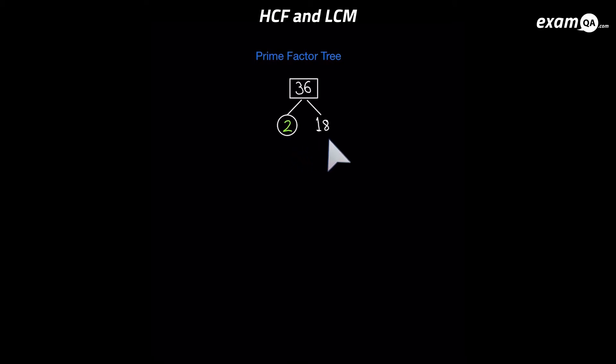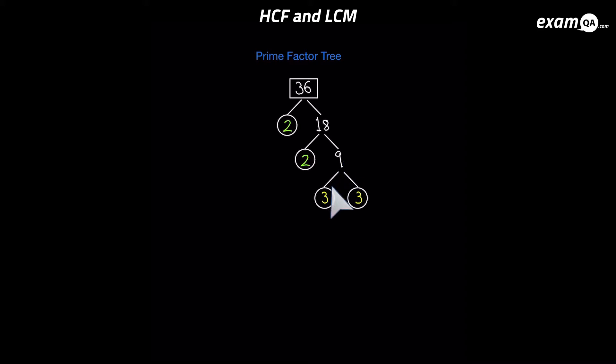With the uncircled number, we carry on. Think of two numbers which multiply to make 18 — I've gone for two times nine. I've circled the two because it's prime and the tree stops there. Nine is not prime, so we must continue. The only option for nine is three times three, and three is prime, so we circle them both. Our tree is complete.